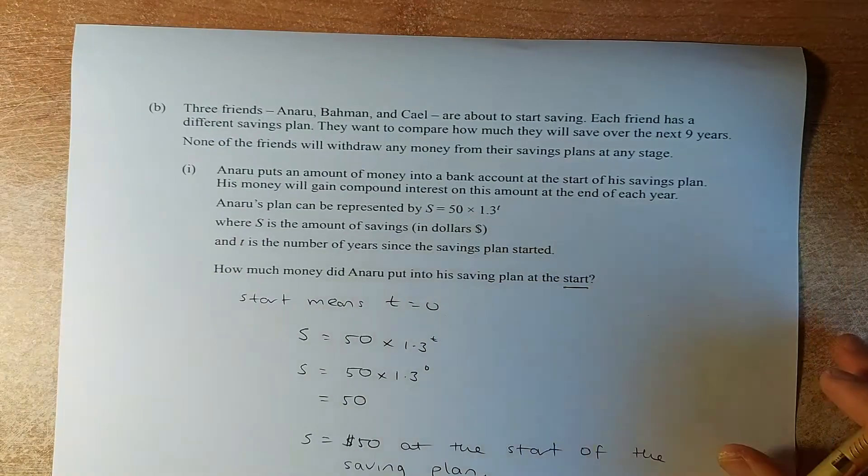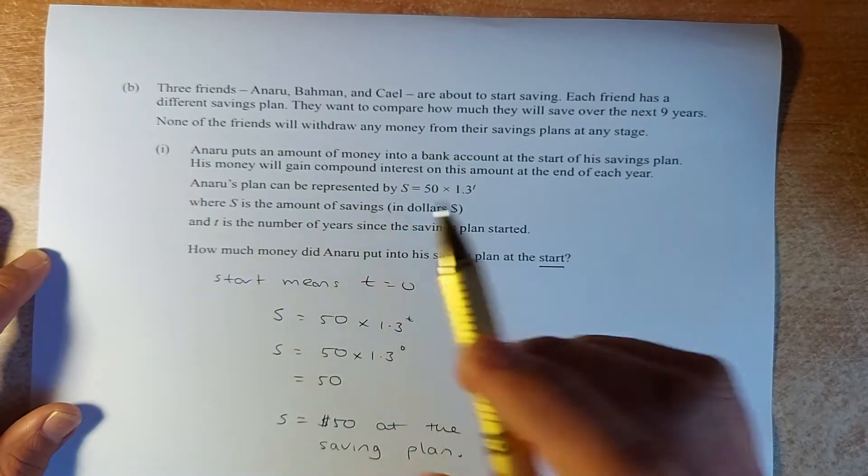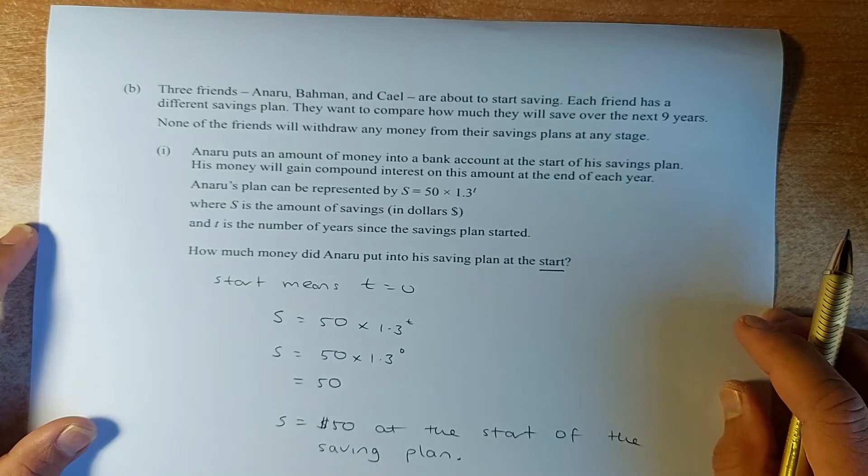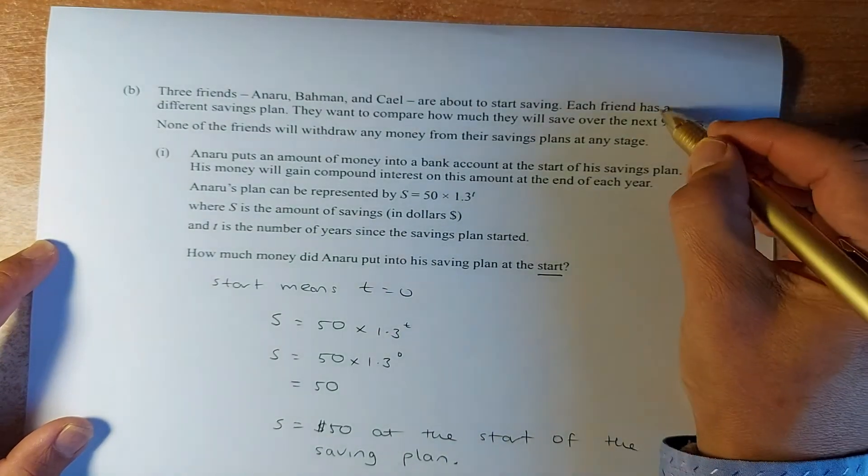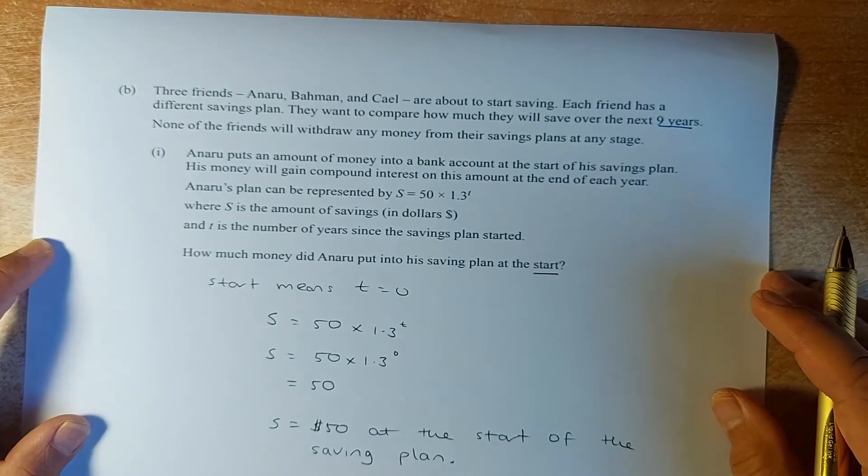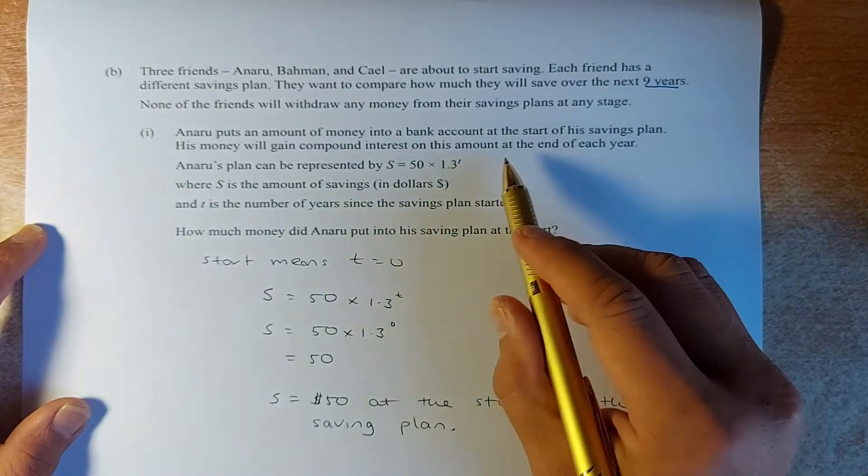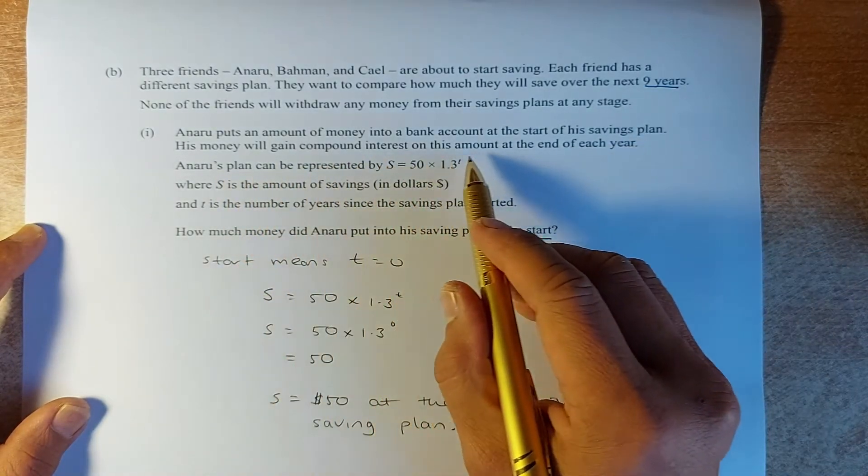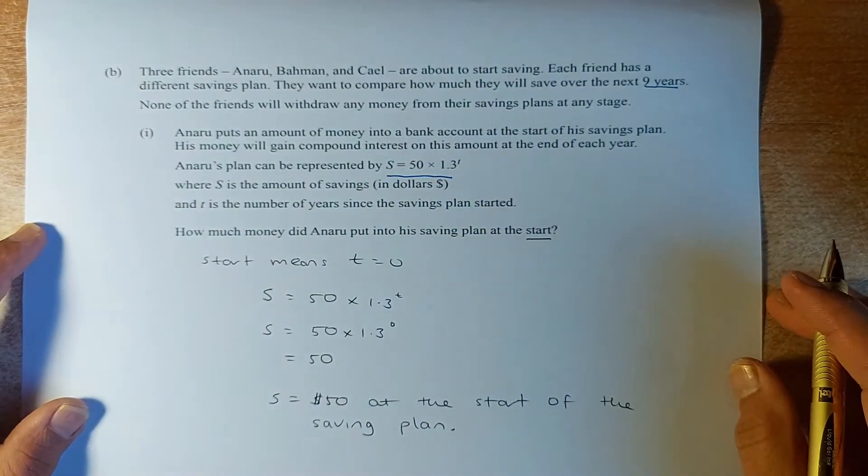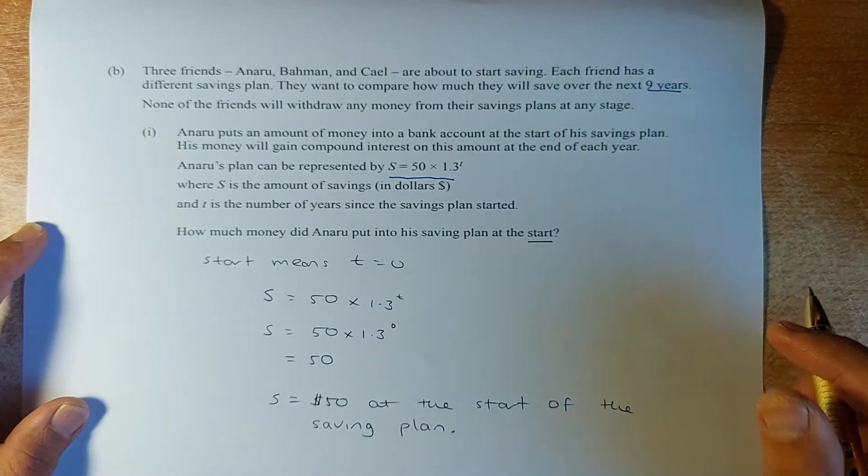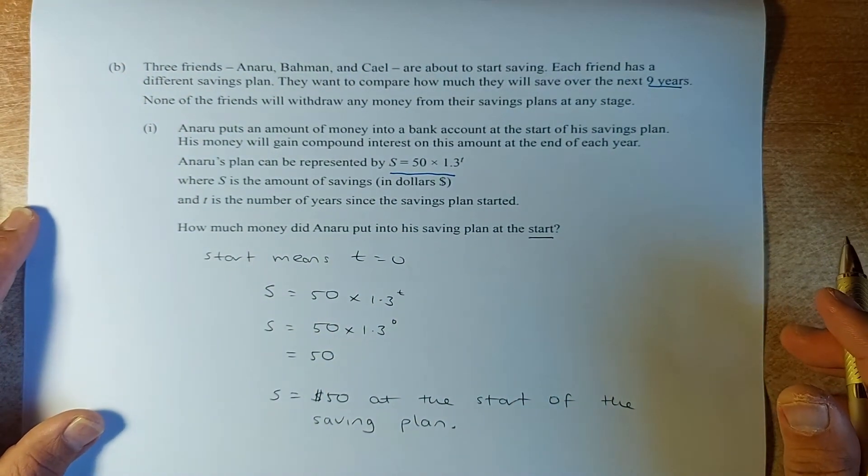Okay, let's go now for question b. Question 1b. Okay, so 3 friends, Anaru, Bachman and Kale or ABC are about to start a saving plan. Each friend has a different saving plan. They want to compare how much they will save over the next 9 years. Let's remember 9 years. None of the friends will withdraw any money from the saving plan at any stage. Okay, so we look at Anaru's scenario. Anaru puts an amount of money in the bank account at the start of the savings plan. His money will gain compound interest at the end of each year. His plan is represented by this formula: Savings equals to 50 times 1.3 to the power of t, where S is the savings, t is number of years. And how much money did Anaru put into the savings plan at the start of the year?